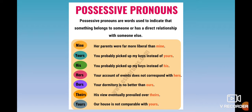Possessive pronouns are words used to indicate that something belongs to someone or has a direct relationship with someone else — pronombres posesivos son los que hacen referencia o indican que algo nos pertenece o que algo le pertenece a alguien o que tiene una relación directa con algo. They indicate possession. For example, 'mine': 'Her parents were far more liberal than mine.'